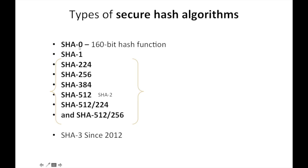The SHA family includes SHA-0, SHA-1, SHA-224, SHA-256, SHA-384, SHA-512, SHA-512/224, SHA-512/256, and finally SHA-3. Overall, the family is grouped into four algorithm families: SHA-0, SHA-1, SHA-2, and SHA-3.